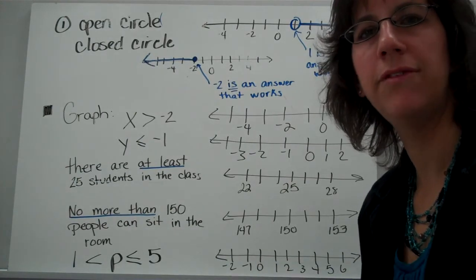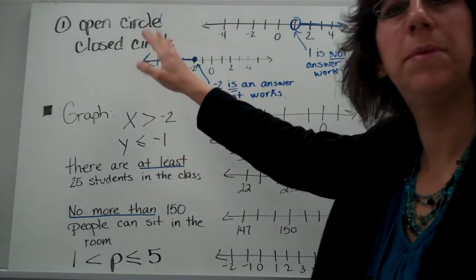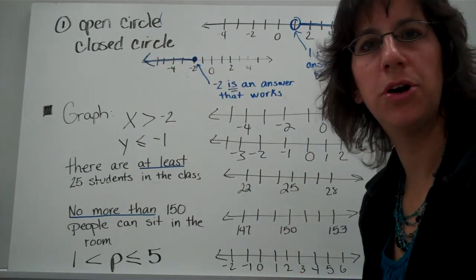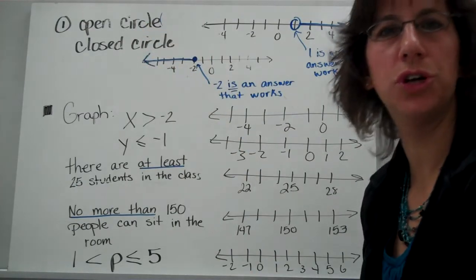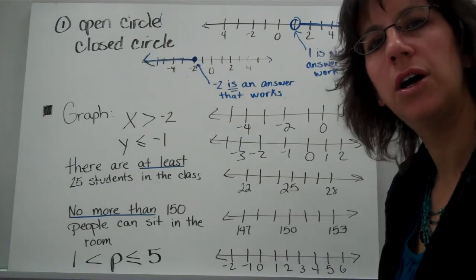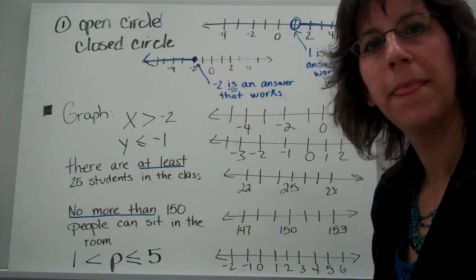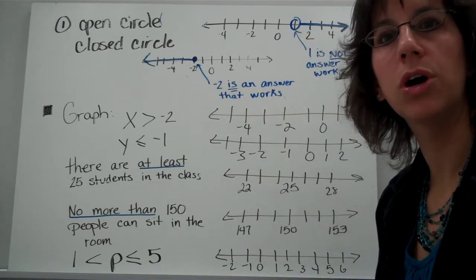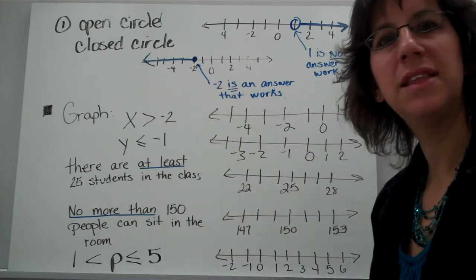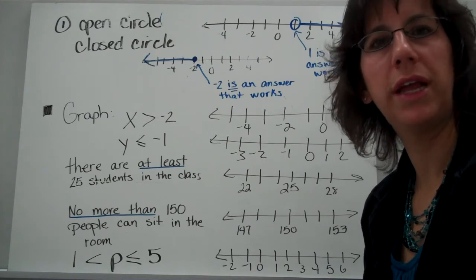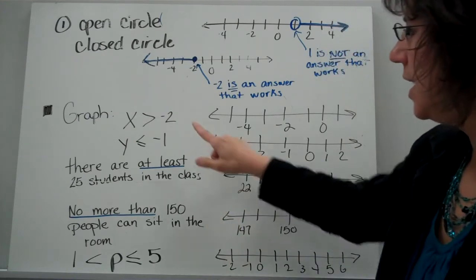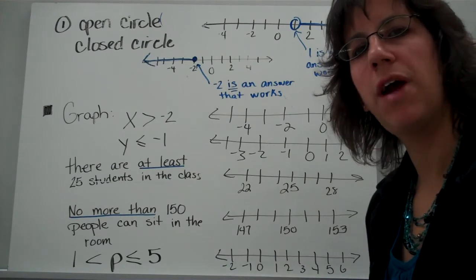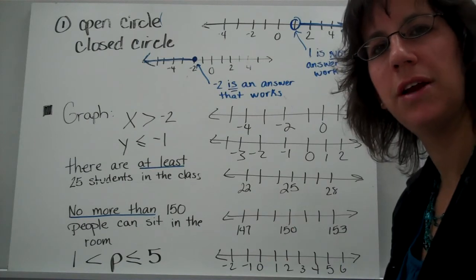The first thing is you want to make sure you have a good understanding of the graphing piece. This is a bit of a review, but we're going to go through it again. When you do graphing for inequalities, you're going to need an open or a closed circle. An open circle is not colored in; a closed circle is colored in. The open circle means that answer is not part of the solution set. A closed circle means that number is part of the solution set. Jot down each example, draw a number line, and come back and we'll do some graphing together.